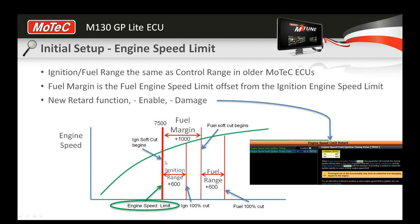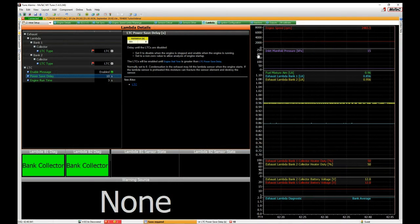The engine speed limit retard has an enable function. When enabled, if the engine speed limit is active, you can apply a retard value. One caution: if you use this heavily, exhaust valves are going to suffer from the heat, so use this feature with caution.